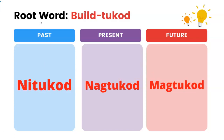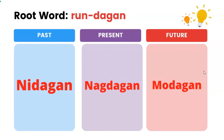Root word: build — tukod. Past: nitukod. Present: nagtukod. Future: magtukod. Run — dagan. Past: nidagan. Present: nagdagan. Future: mudagan.